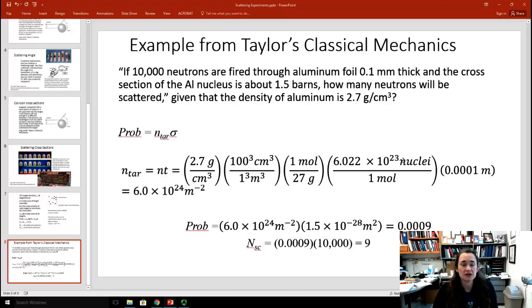That gives us the number of nuclei per unit volume. And then we're going to multiply that times the thickness, which is .0001 meters, in order to obtain the number of target nuclei per unit cross sectional area. And that gives us 6 times 10 to the 24th inverse meters squared.